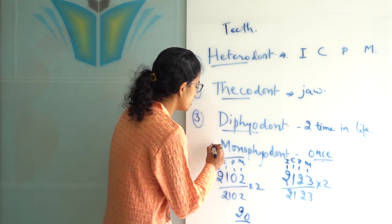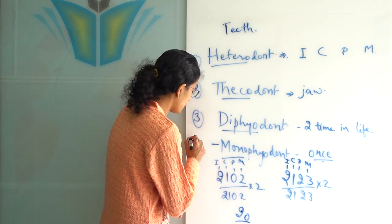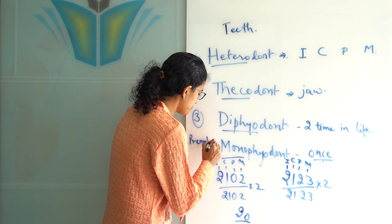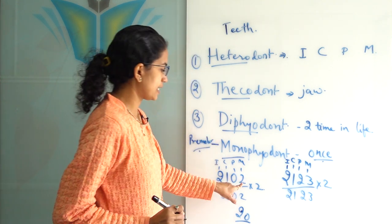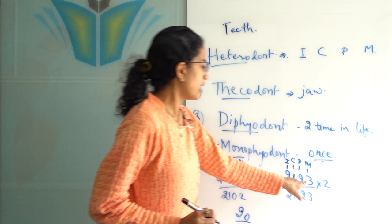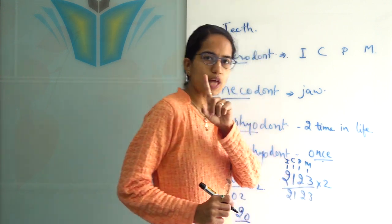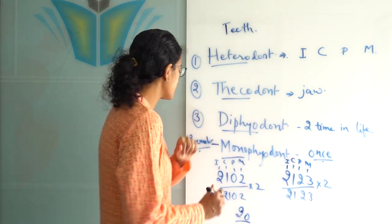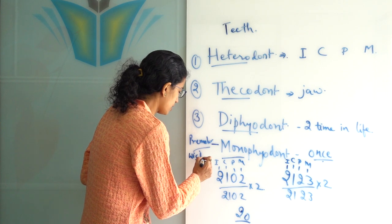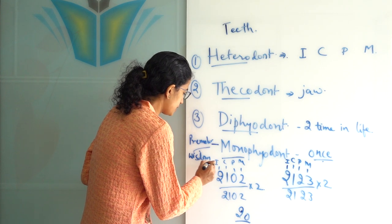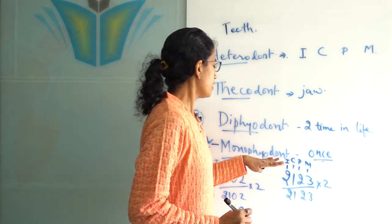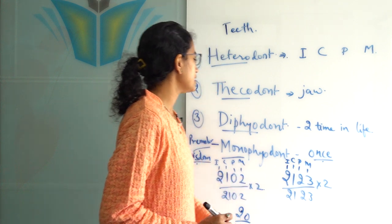Since premolars were absent in the milk teeth set, premolars are monophyodont. Also, in the milk teeth molar set there were two teeth, but in adults there are three — that additional one is the wisdom tooth. So wisdom teeth are also monophyodont. Besides these, all other teeth are diphyodont.